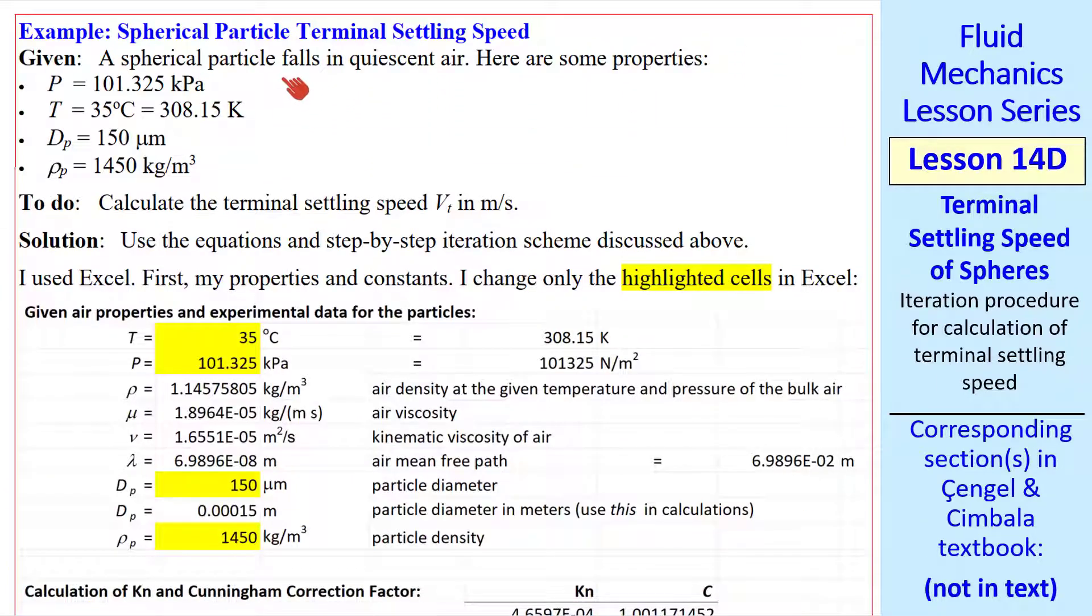I'll do an example to illustrate. We have a spherical particle falling in quiescent air. Here's the pressure and temperature of the air, the particle diameter in microns, and the particle density. We want to calculate terminal settling speed vt. To solve, we'll use the step-by-step iteration scheme that I just discussed. I used Excel for my calculations.